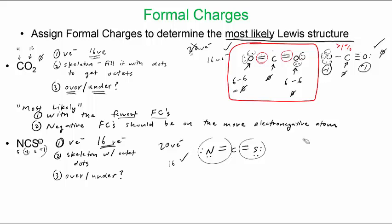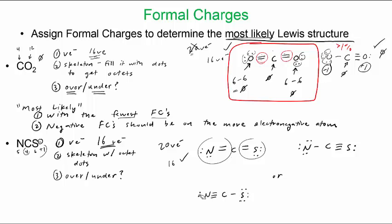Similar to CO2, we could also have drawn alternative structures: a triple bond on the carbon–nitrogen side with a single on sulfur, or a triple bond on the carbon–sulfur side with a single on nitrogen. So we have three candidate structures to evaluate.